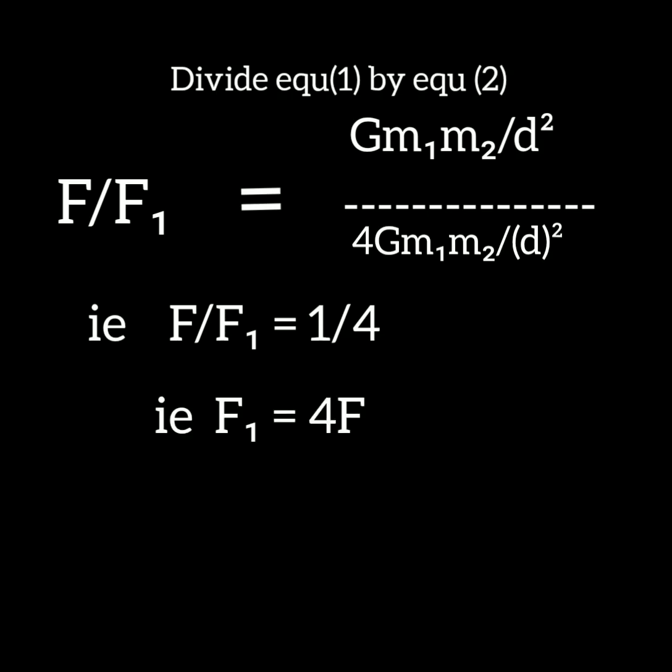When we cross multiply this equation, we get F1 into 1 equals 4 into F. Therefore F1 equals 4F. That shows the new gravitational force equals 4 times the original gravitational force.